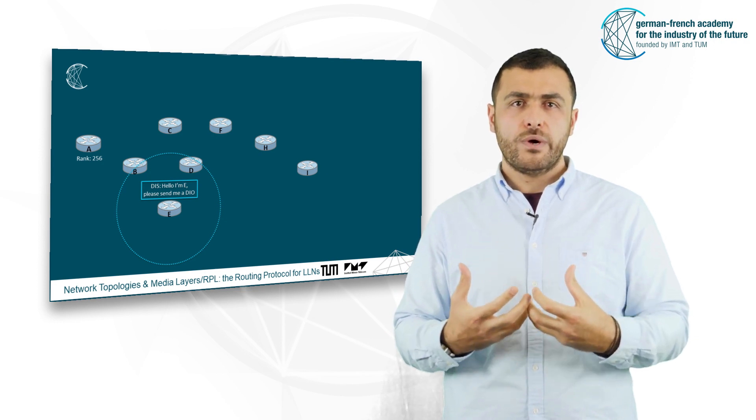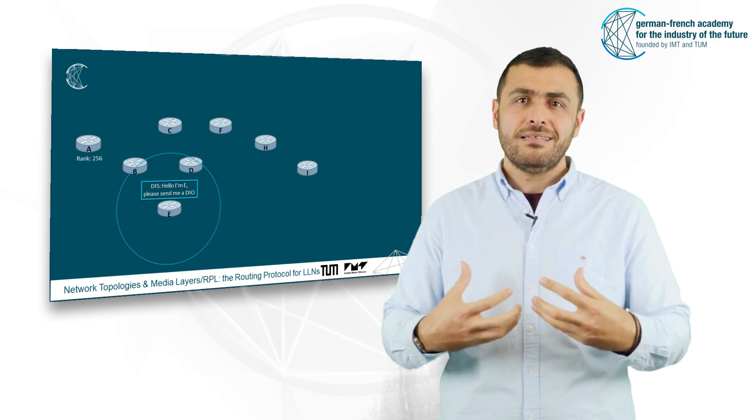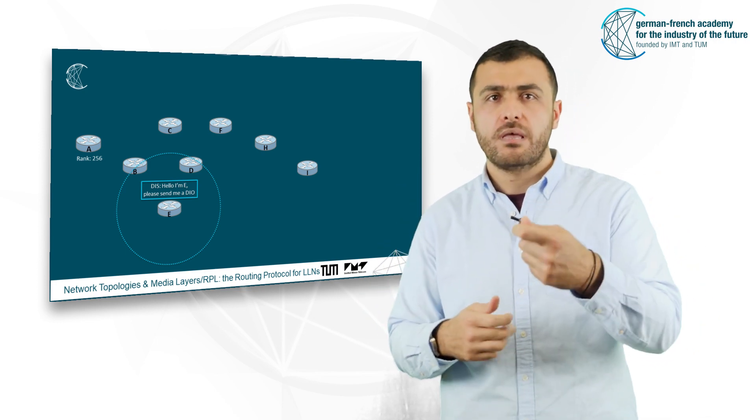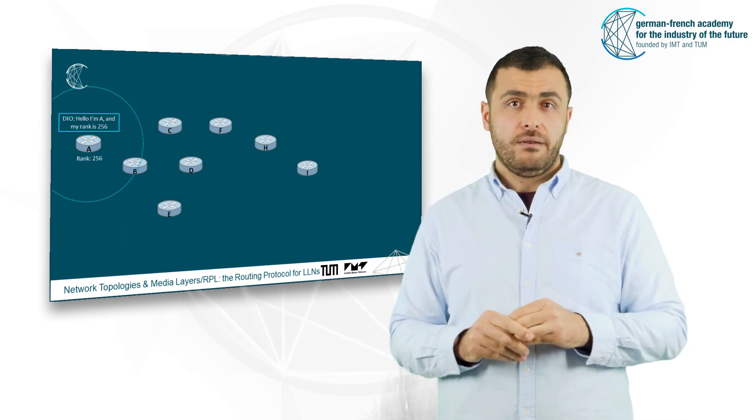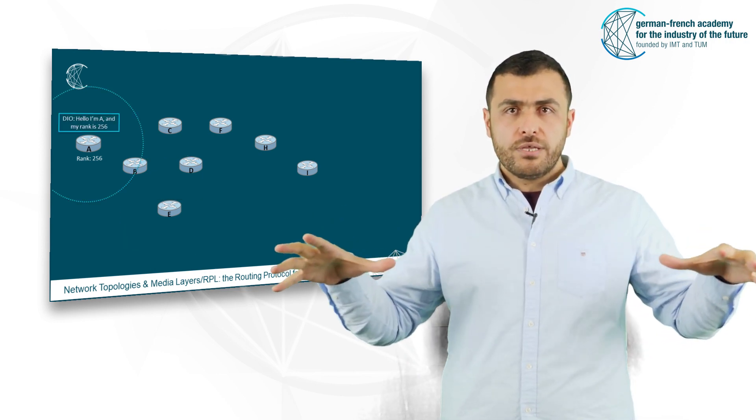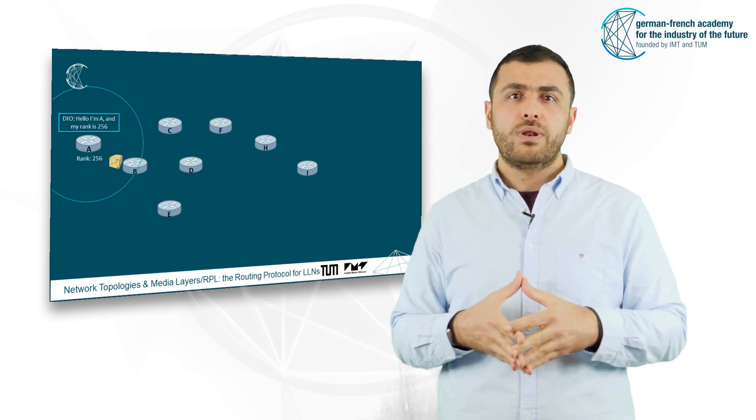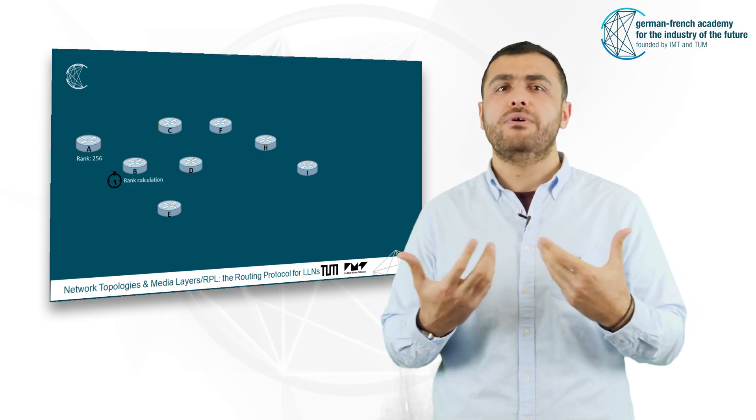Any other node has to wait to receive a DIO control packet or they may send a DIS control packet to actually request from their neighbors to send a DIO. Then, the nodes in the propagation range of the root, in this case node B only, will receive this control packet and it will compute its own rank.